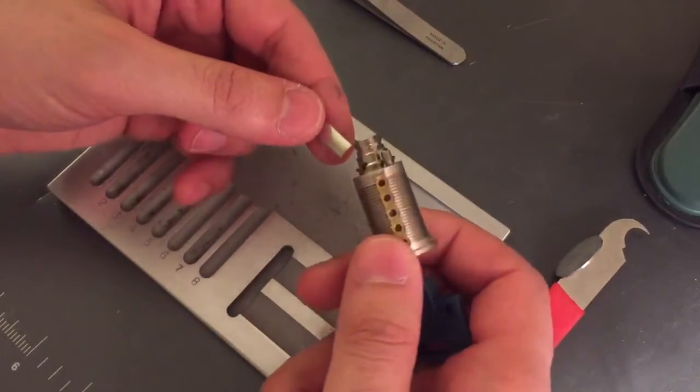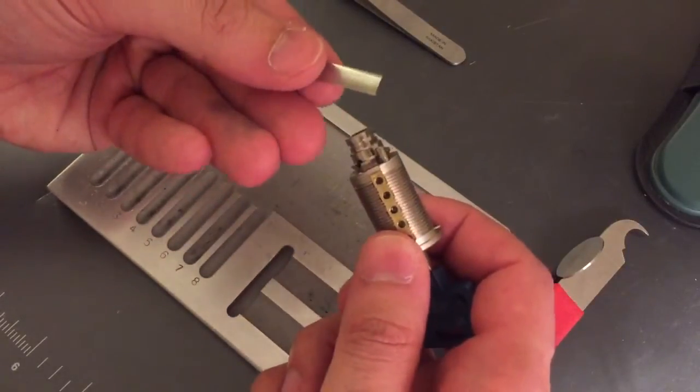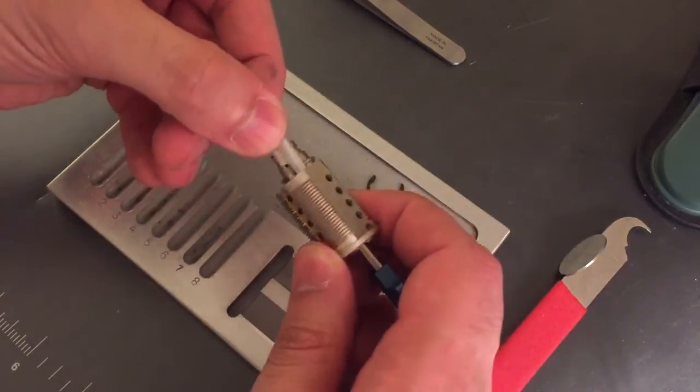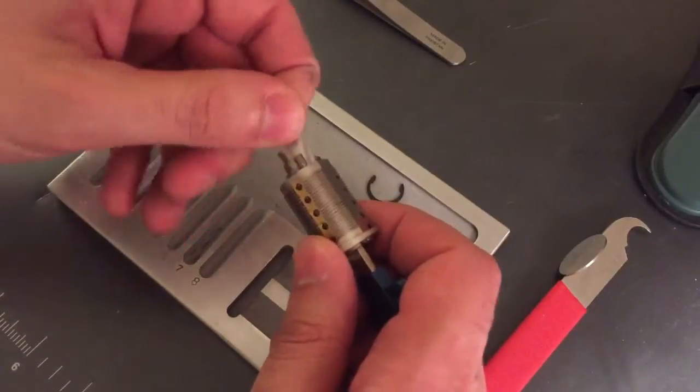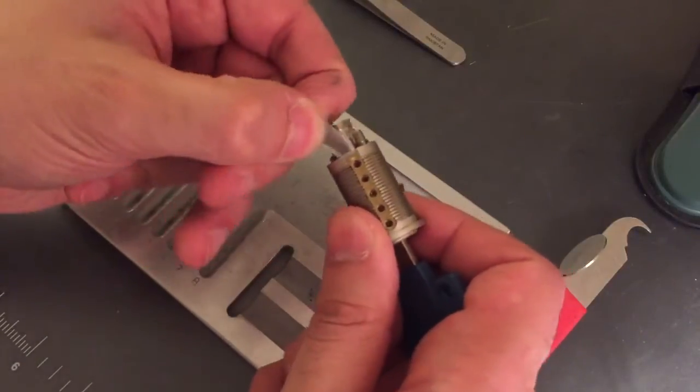The cores are serrated. There's a lot of holes where you wouldn't expect. So generally what I do is I take a shim before I gut them and place it in front of the driver pins in the hope that I can avoid any problems.